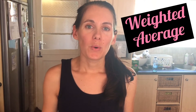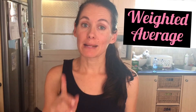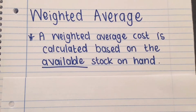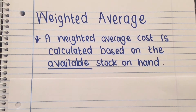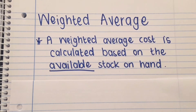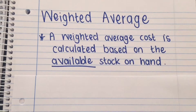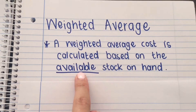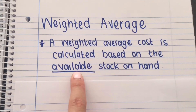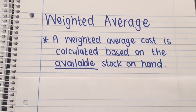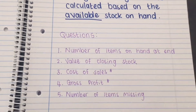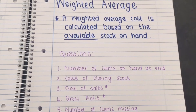Now we're going to look at the second method of how to value our inventory. That is called weighted average, and I'm still busy with my lemon business. As per definition, weighted average means a weighted average cost is calculated based on the available stock on hand — what is available in the business to be sold. We're going to look at the same five questions.